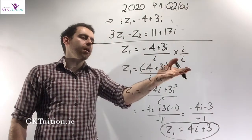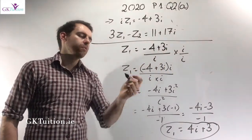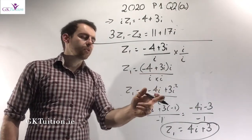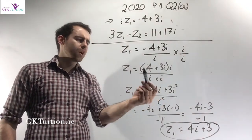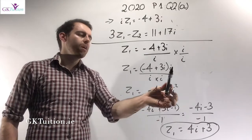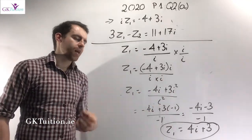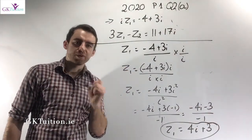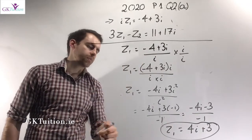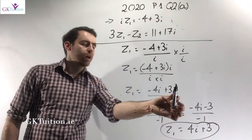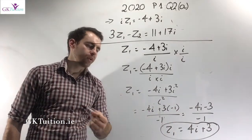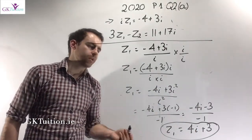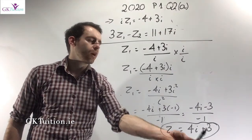If you're multiplying the bottom by i, you must also multiply the top by i. So multiplying the top by i gives minus 4 plus 3i times i. On the bottom, i by i becomes i squared. On the top, i by minus 4 is minus 4i, and i by 3i is 3i squared. I know that i squared equals minus 1, so the bottom becomes minus 1 and 3i squared becomes 3 times minus 1. Simplifying gives minus 4i minus 3 over minus 1. A minus divided by a minus is a plus, so z1 equals 3 plus 4i.